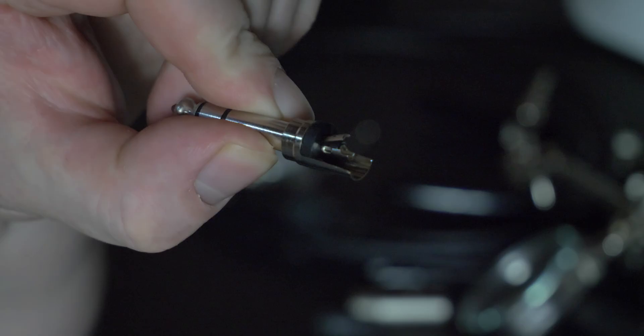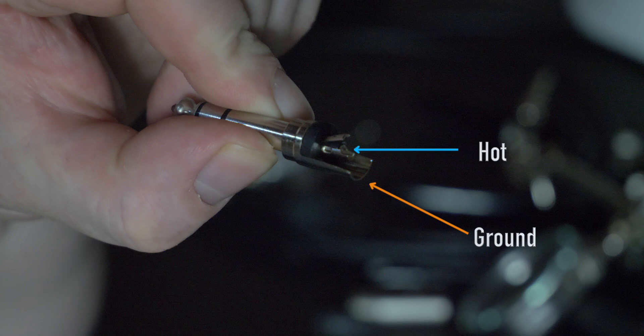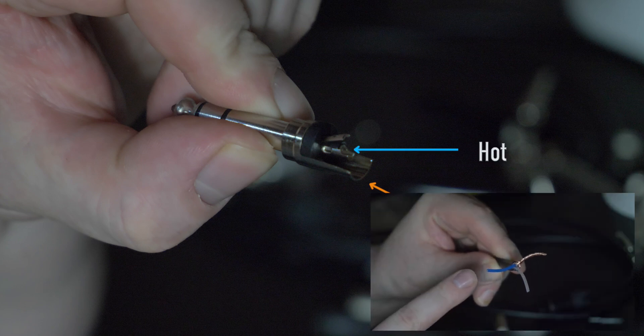The first being the casing or the body of the plug which is used to connect the ground. The second being this center contact point which is used to connect the hot or colored wire. Blue in this video.